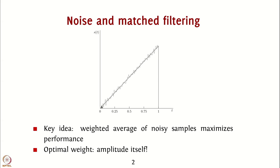It turns out that if you look at matched filter theory, the matched filter — that filter which you have to choose, or that combination of values — is basically weighted in such a way that you give these low SNR points a smaller weightage and high SNR points a higher weightage. Therefore, from the perspective of maximizing the signal-to-noise ratio by combining all these optimally, you have to essentially weight these values exactly by the amplitude of the ramp: multiply each noisy sample by the corresponding ramp amplitude and add all of them up, which translates to multiplying the noisy ramp by the clean ramp and then performing the averaging. That is the optimal weight is the amplitude itself.